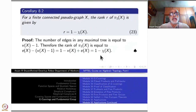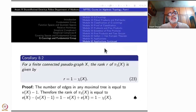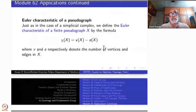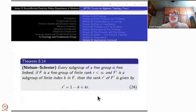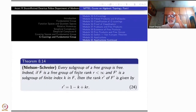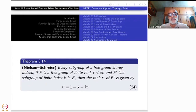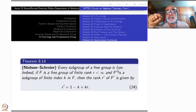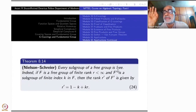We now give an application to one of the most important results in group theory, called the Nielsen-Schreier theorem. Both Nielsen and Schreier did a lot of group theory motivated by topology. The theorem states: every subgroup of a free group is free. Note that the subgroup's basis need not be a subset of the larger group's basis — only that it is itself free.